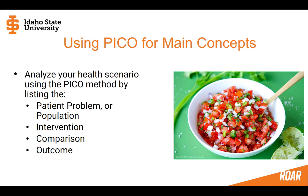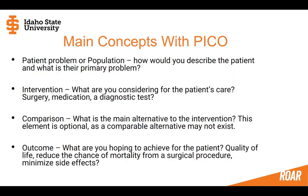So what do these things mean? Your patient problem or population is how you would describe the patient and what their primary health problem is that you're looking to address through the intervention. The intervention is what you're considering for the patient's care — whether it's surgery, medication, using a diagnostic test, or a lifestyle intervention like a diet.